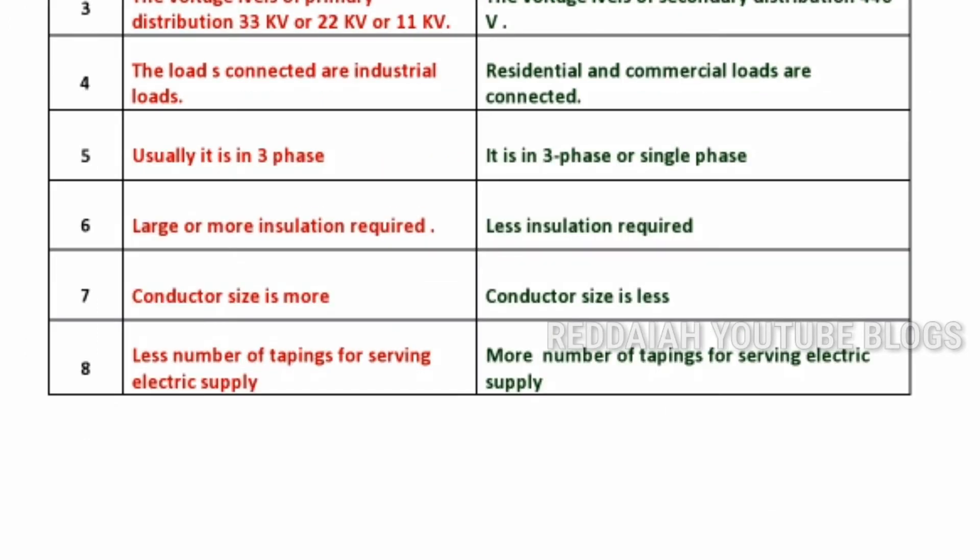Usually there are fewer tappings in the primary distribution system — that is, a less number of tappings for serving electric supply. In the secondary distribution system, there are more tappings for serving electric supply. From the distributor, a large number of tappings go to different loads.